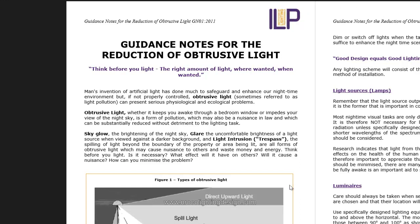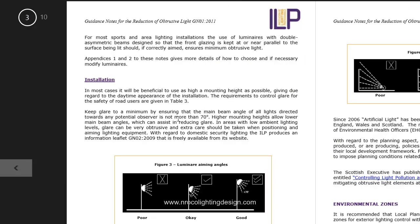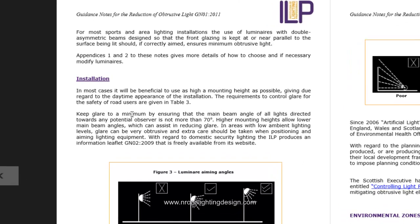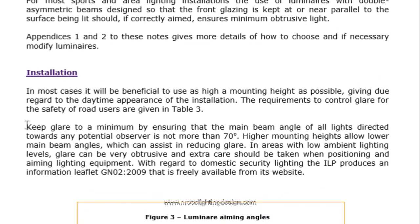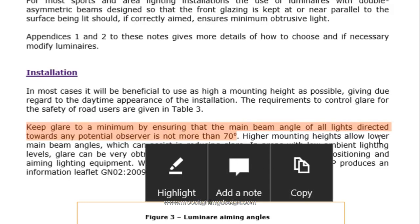This is a guidance document called 'Guidance Notes for the Reduction of Obtrusive Light,' so you must understand what obtrusive light means. On page three, for the installation of floodlights, it says: keep glare to a minimum by ensuring that the main beam angle of all lights directed towards any potential observer is not more than 70 degrees. So 70 degrees is the maximum angle for your floodlight.